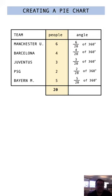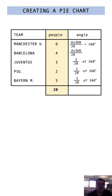So 6/20ths of 360 degrees: 6 over 20 times 360 gives you 108 degrees. Next, 4/20ths of 360: 4 on top, 20 on the bottom, times 360 gives you 72. Next, 3/20ths of 360: 3 on top, 20 on the bottom, times 360 gives you 54.